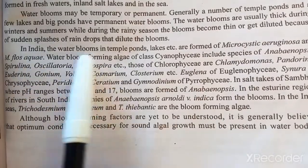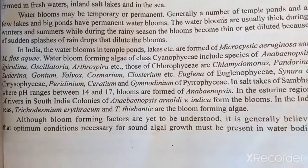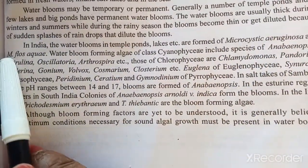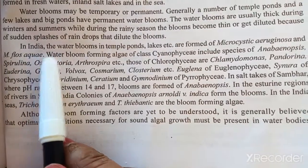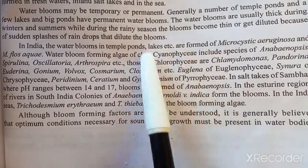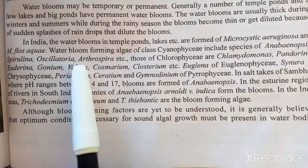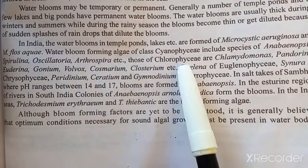In India, water blooms are found in temple lakes and similar water bodies — these are two common examples of water bloom. The algal classes forming water blooms include Cyanophyceae, including the species Anabaena, Spirulina, and Arthrospira.